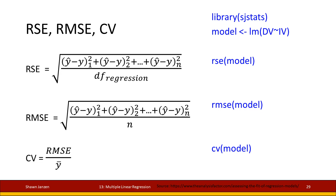Looking at the math briefly: the RSE has in the numerator the residuals — y-hats and y's — differenced and squared, then summed. That's the sum of squared residuals, which is what we're trying to minimize in OLS. That sum of squared residuals is divided by the degrees of freedom of your particular regression model, and then we take the square root of it — that's your residual standard error.